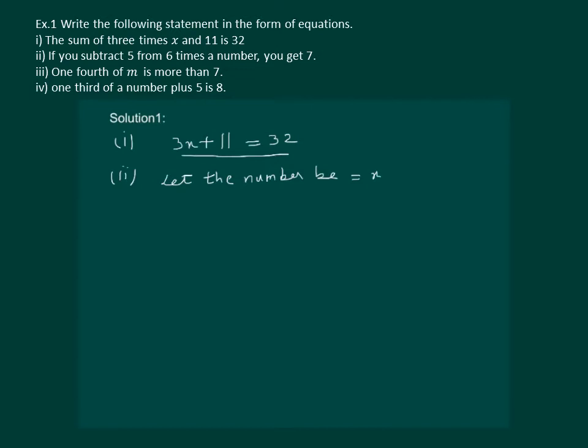If you subtract 5 from 6 times a number, so the number becomes 6x, and if we subtract 5 from it,